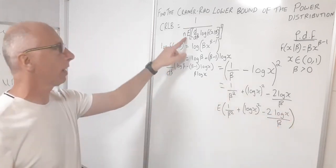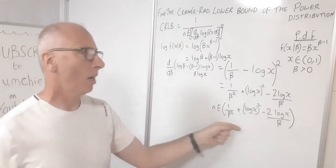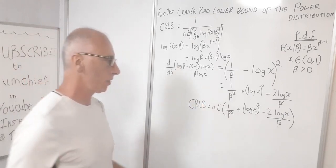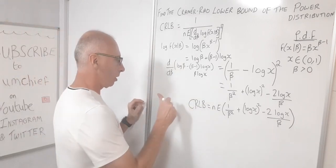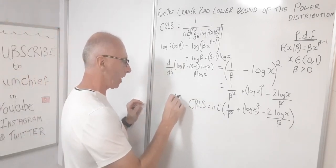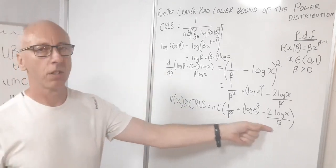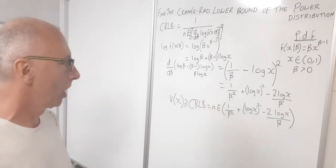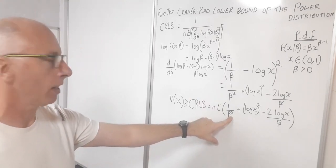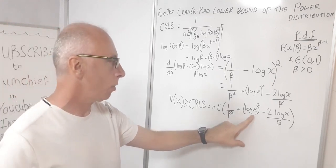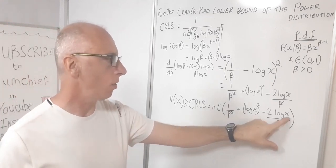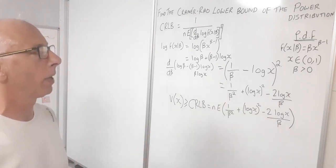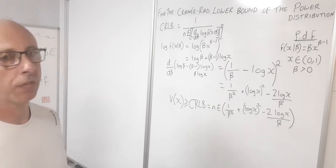So we have the expectation of 1/β² + (log x)² - 2·log(x)/β, multiplied by n — that's our Cramér-Rao lower bound in terms of variance. But this isn't telling us much, since we don't know the expectation of (log x)² or log(x)·(-2/β). So we need to use another formula — the Fisher information.